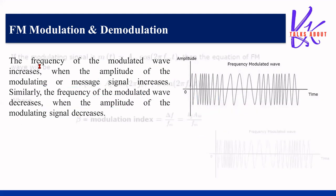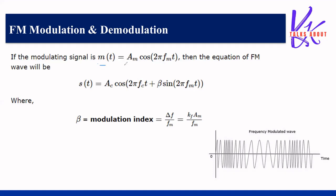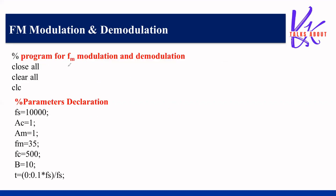Mathematically, we have a message signal m(t) and a carrier signal c(t), where c(t) = Ac·cos(2π·fc·t). When we do frequency modulation, s(t) = Ac·cos(2π·fc·t + β·sin(2π·fm·t)). This is the standard equation for frequency modulation. Here β represents the modulation index, which is Δf divided by fm, or equivalently kf·Am.